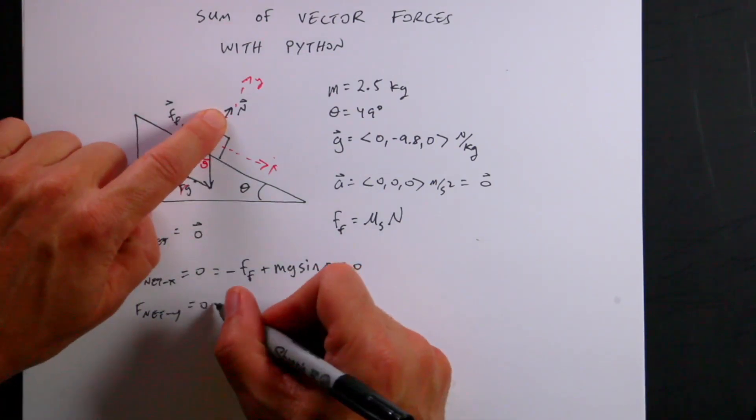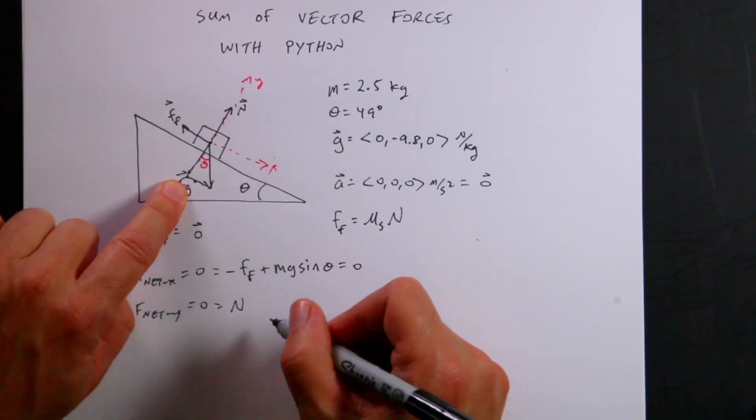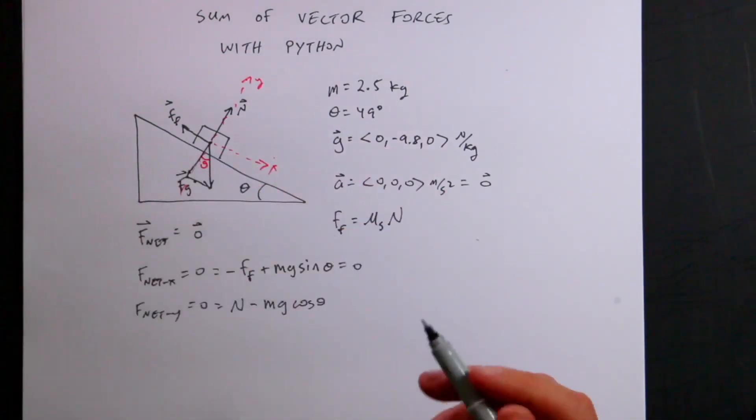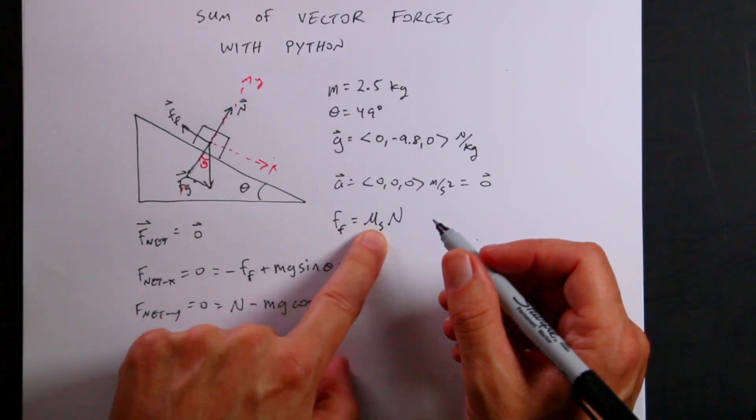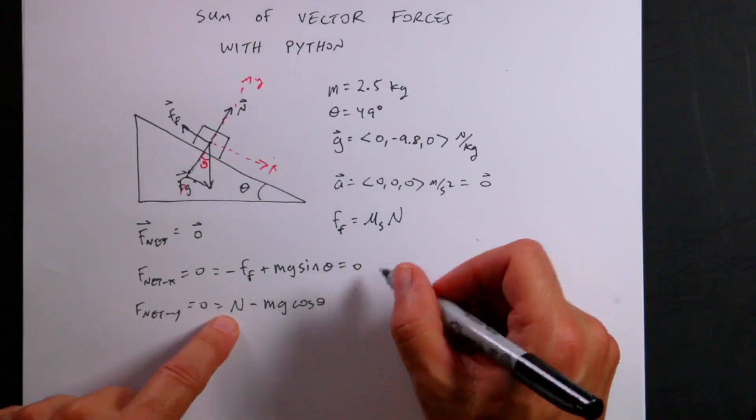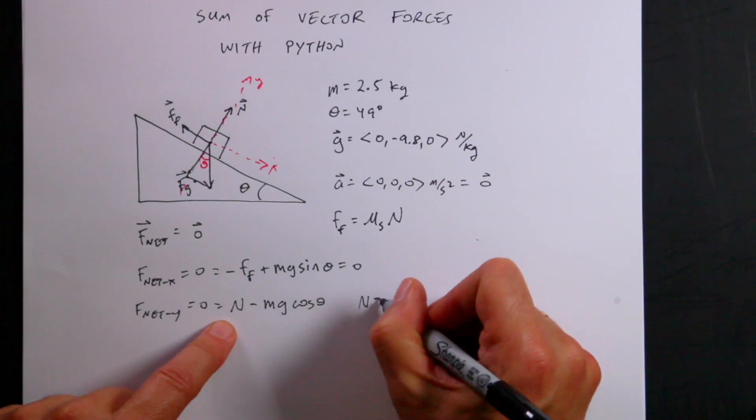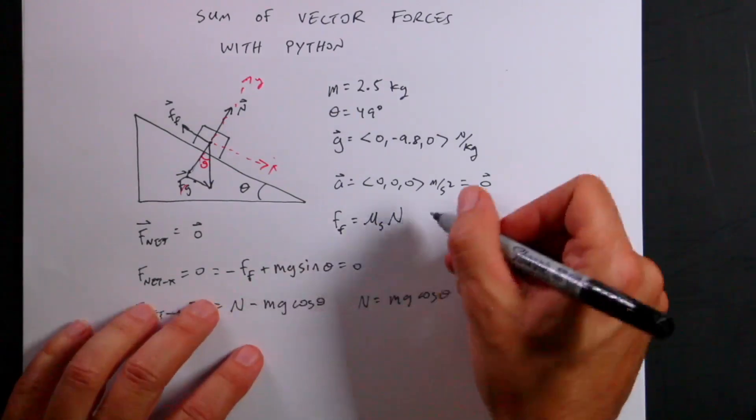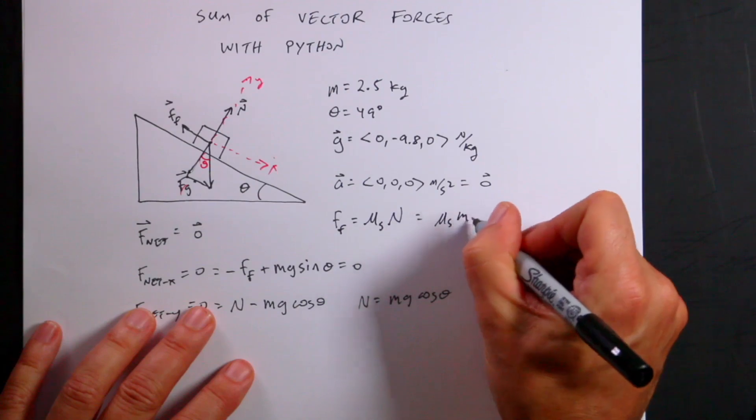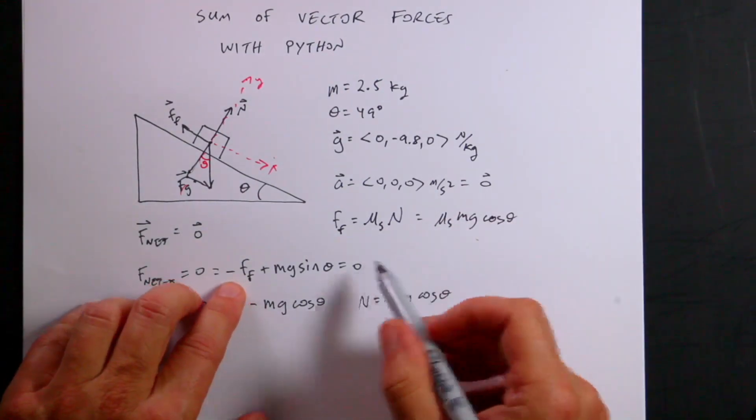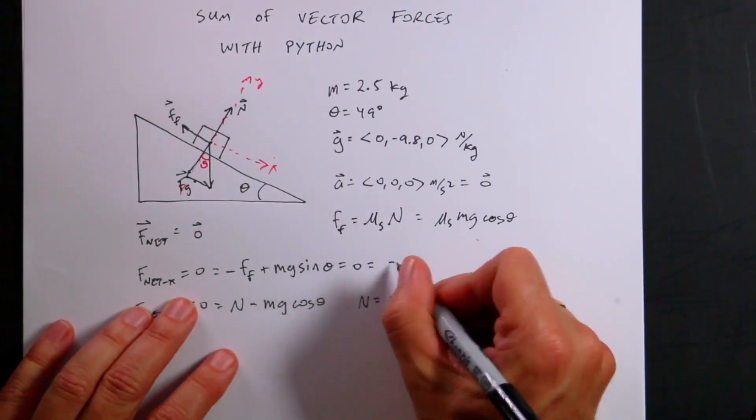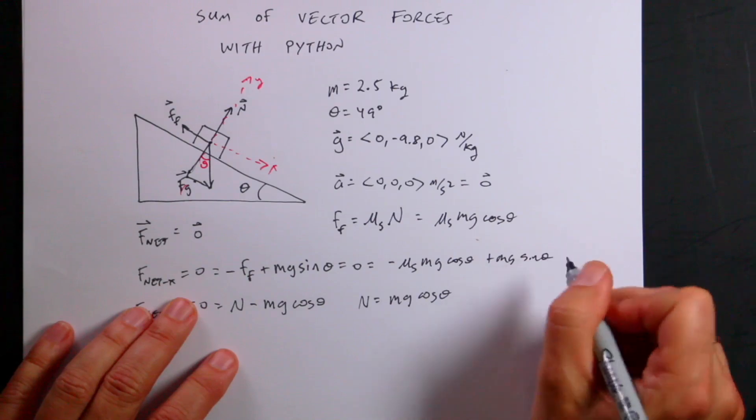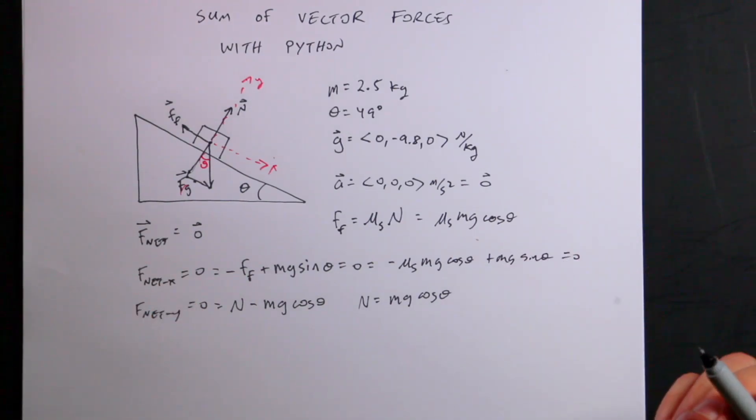Now if I do the same thing for the y direction, I have the normal force is in the y direction. And then a part of the gravitational force minus mg cosine theta because now I'm dealing with the adjacent side. I can solve for the normal force, n equals mg cosine theta. If I put that in, I get the friction force is mu s mg cosine theta. And then if I go down here, I get 0 equals negative mu s mg cosine theta plus mg sine theta equals 0. And I could solve for theta or whatever I want.